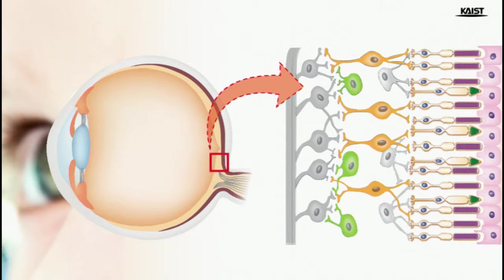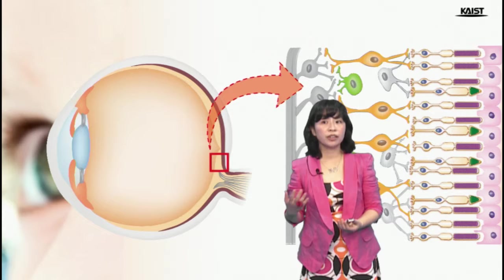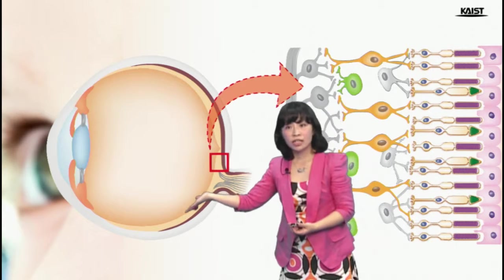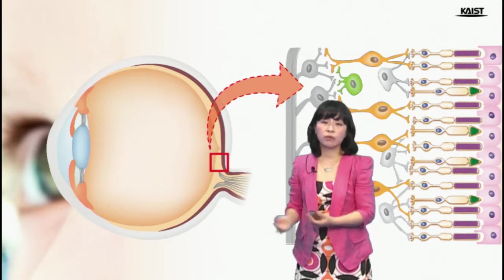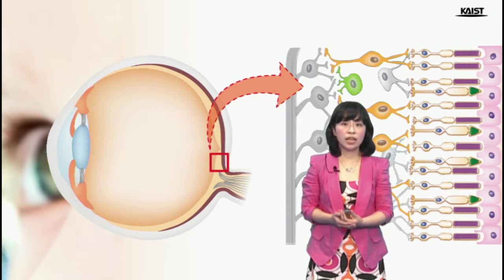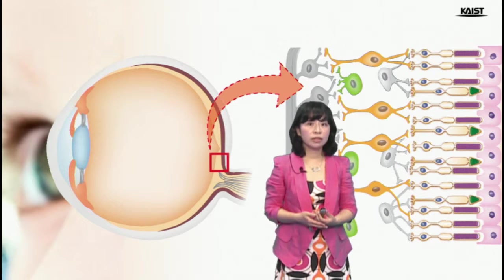This figure illustrates the section of the eyeball. As you have already learned, we call here the retina. When we look into the structure of the retina, the retina contains two important photoreceptors, which are rods and cones.